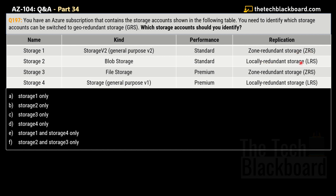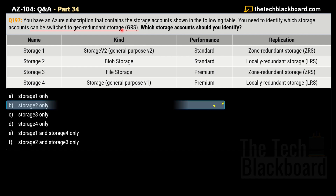The options are: A — Storage 1 only, B — Storage 2 only, C — Storage 3 only, D — Storage 4 only, E — Storage 1 and Storage 4 only, and F — Storage 2 and Storage 3 only. The correct answer is option B, Storage 2 only. Storage 2 is Blob Storage kind, with Standard performance, and a replication of Locally Redundant Storage (LRS).